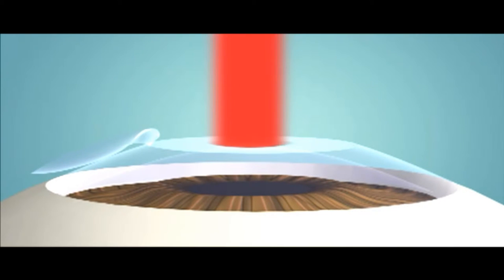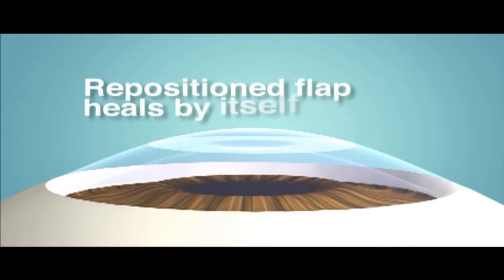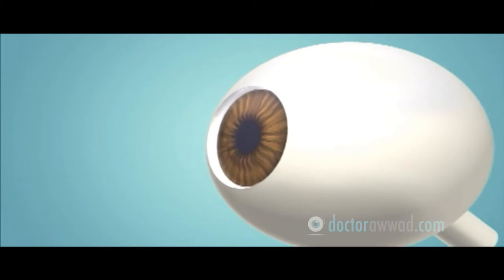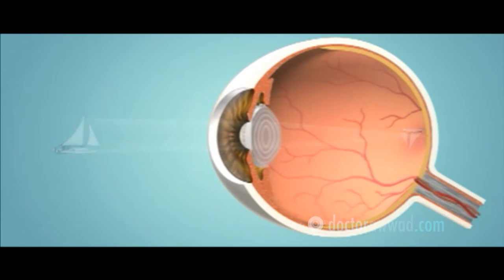Either decreasing the curvature of the cornea to correct nearsightedness or increasing the curvature of the cornea to correct farsightedness. The reshaped cornea allows the light rays to focus more accurately on the retina.